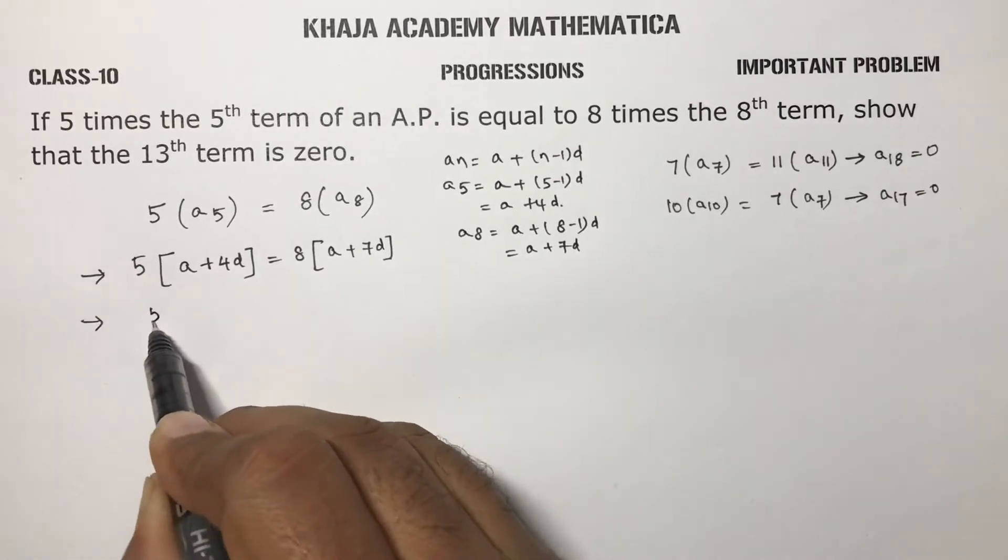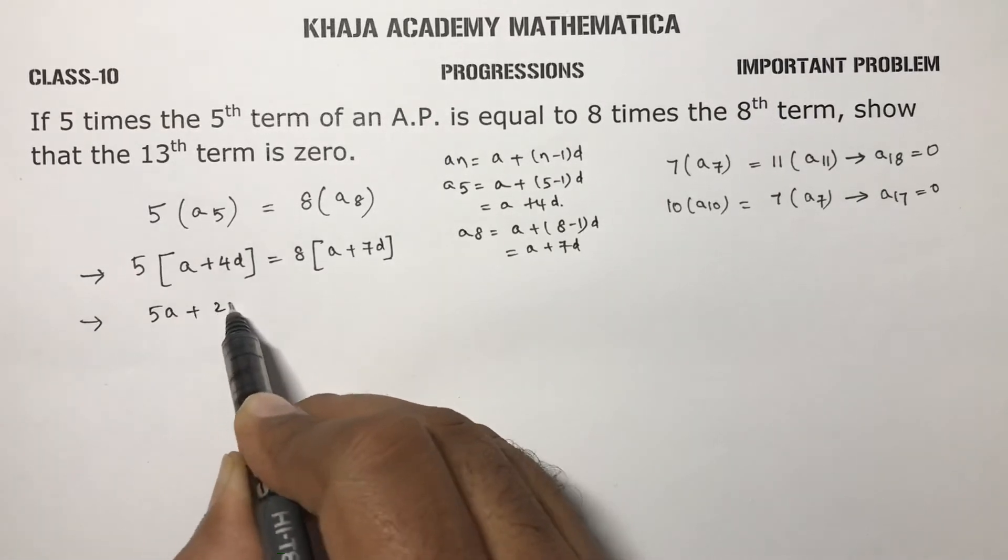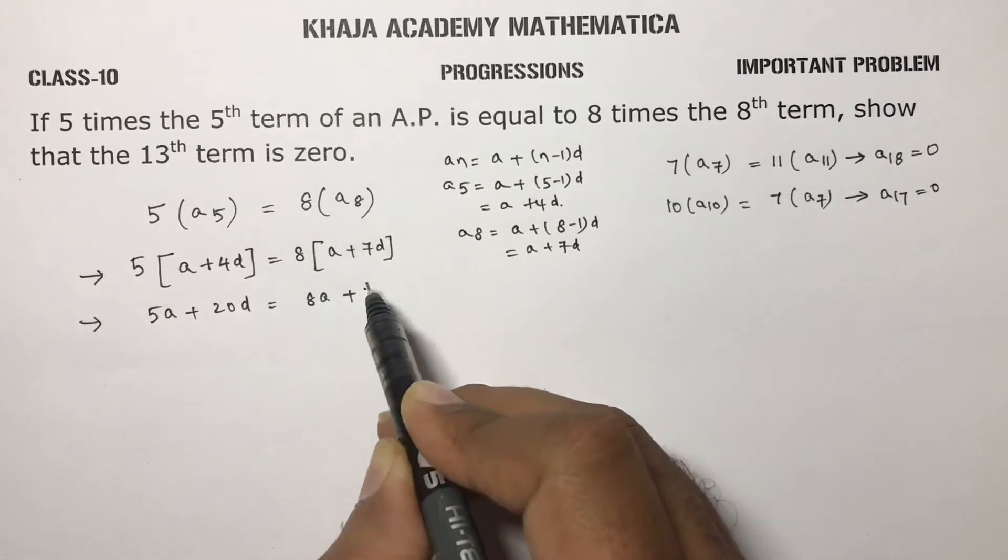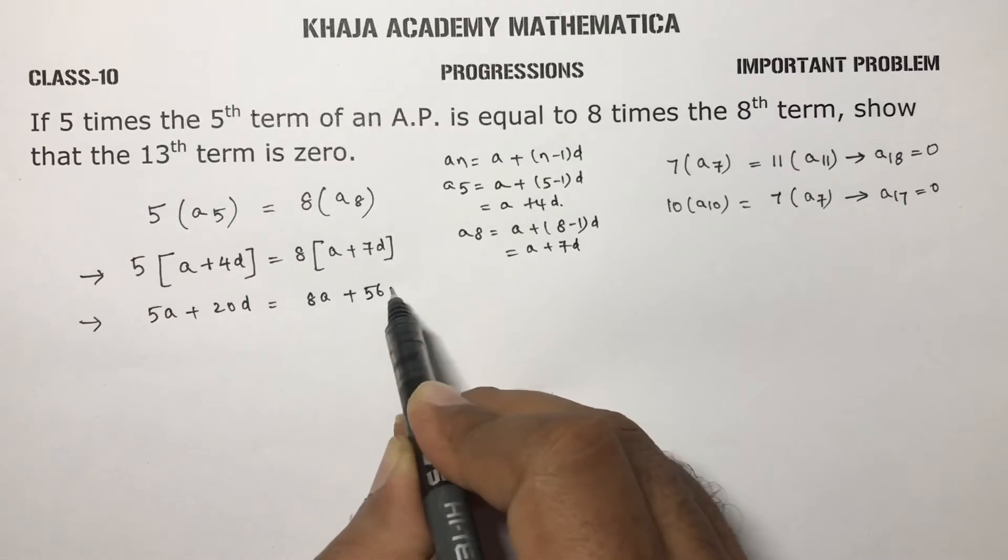If we simplify this, 5 times A is 5A. 5 times 4 is 20D. 8A, 8 times 7 is 56D.